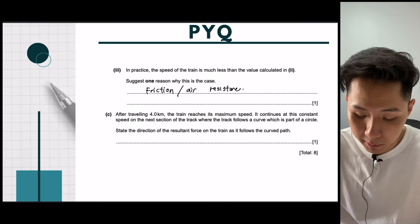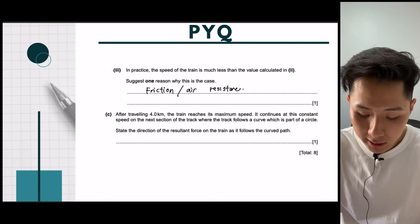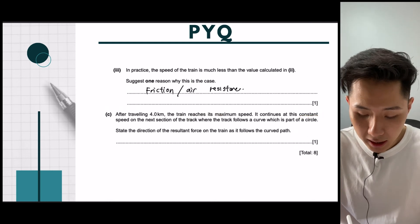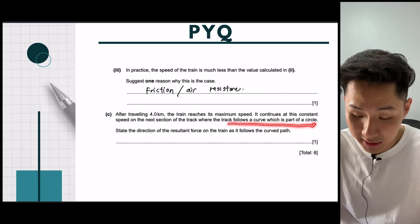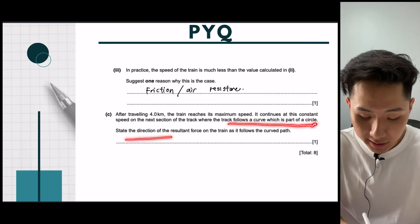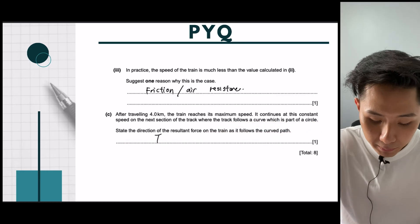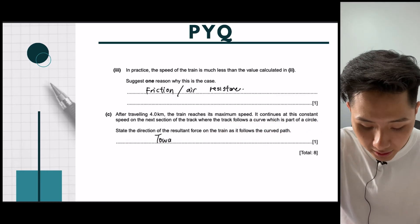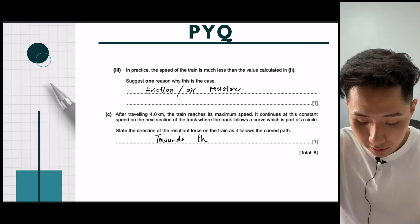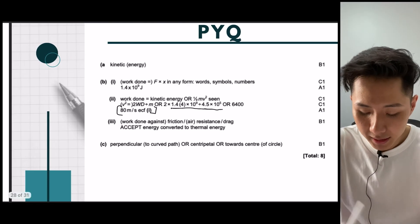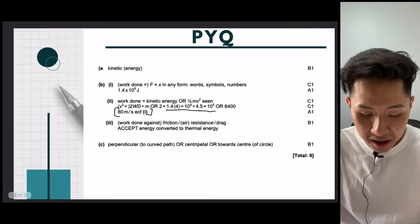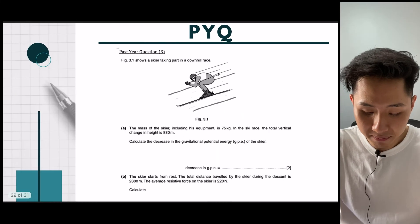And after traveling for 4km, next question, the train reaches its maximum speed. It continues at this speed, and then follows a curve which is a part of the circle. State the direction of the resultant force as it follows the curve path. Because they are moving in a circle, the answer is just towards the center. So here is the marking scheme. Our answers are correct.